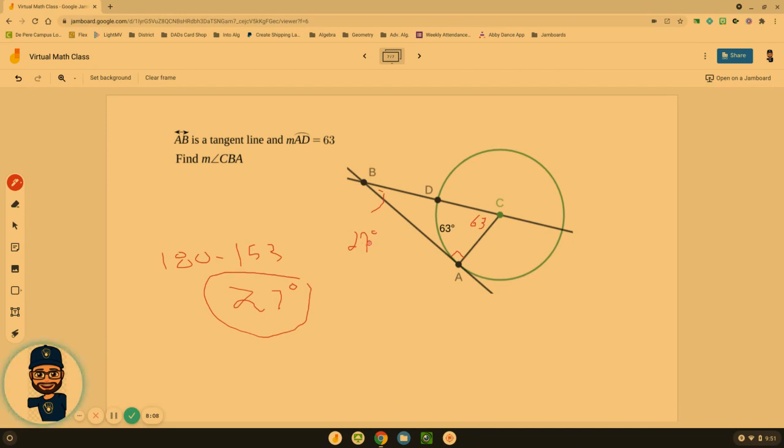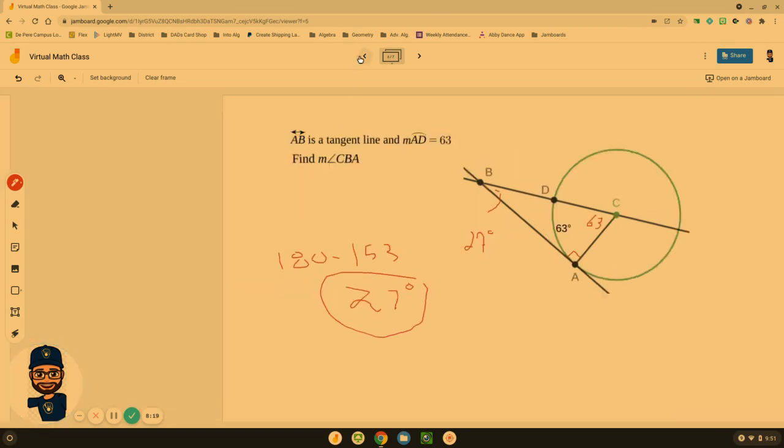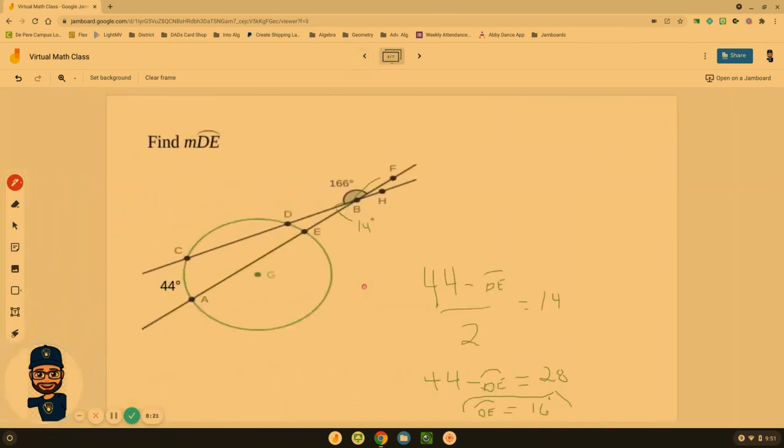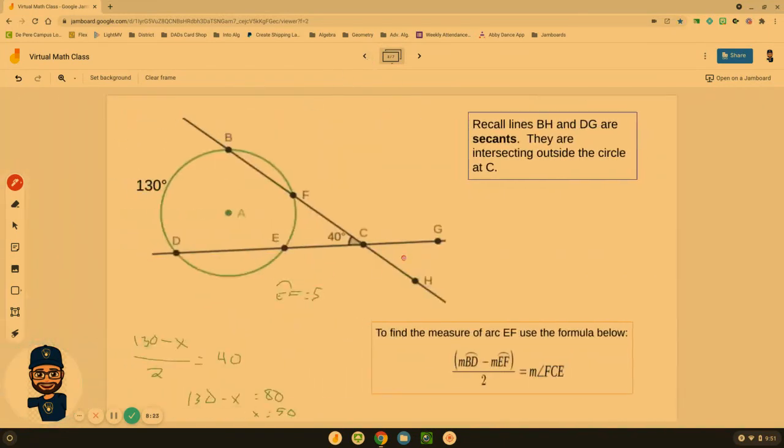So now we've added on those two new rules. Where if we have a tangent line, we know this is 90, and we have a central angle. So use those two pieces to help you find the missing one. And if the two lines intersect outside, we're going to do arc minus the arc divided by two to get the angle measure. If you have any questions, please make sure that you reach out and let me know. I hope you've got those notes down. Otherwise, until next time everyone, stay safe.